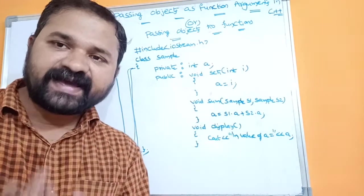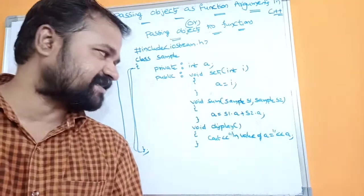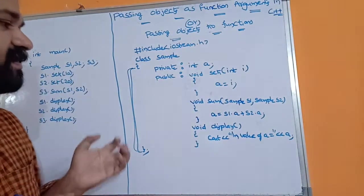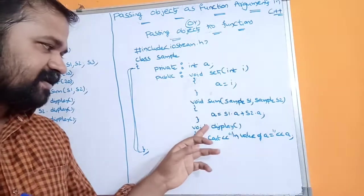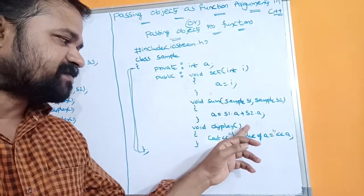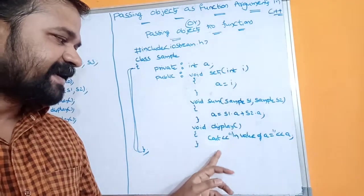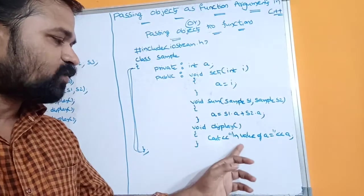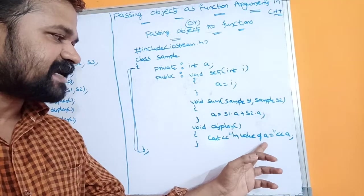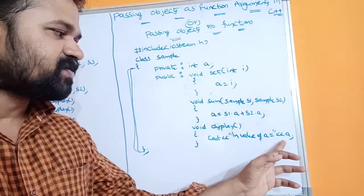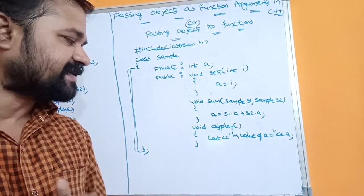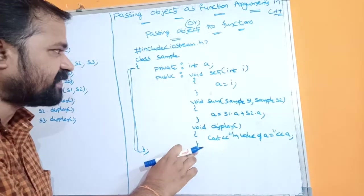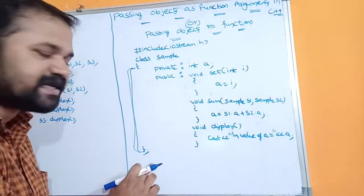In the sum function, we calculate a = s1.a + s2.a, storing the result in the member variable a. We will get perfect clarity while calling the functions. The display function simply prints the value: cout << "\nValue of a = " << a.